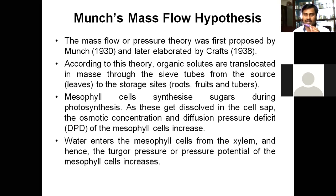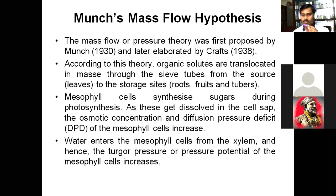Food material is produced in the mesophyll cell during photosynthesis; large amounts of sugars are produced in the mesophyll cell, which get dissolved in the cell sap. Due to increased osmotic concentration and DPD, water enters the mesophyll cell from the xylem, and hence the turgor pressure or pressure potential of the mesophyll cell increases. Due to this, food material is forced or pressurized to move out of the mesophyll tissue into the phloem.